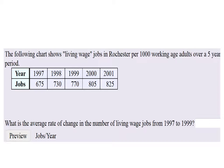This chart shows living wage jobs in Rochester per 1,000 working-age adults over a five-year period. Find the rate of change between these two years. This is the one where we're picking between those two specific points — otherwise we wouldn't have to make a scatterplot of this probably.